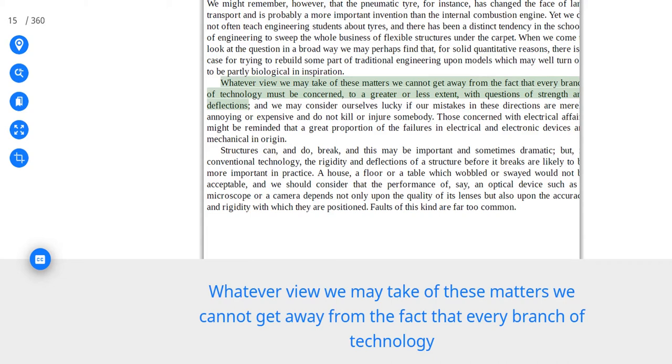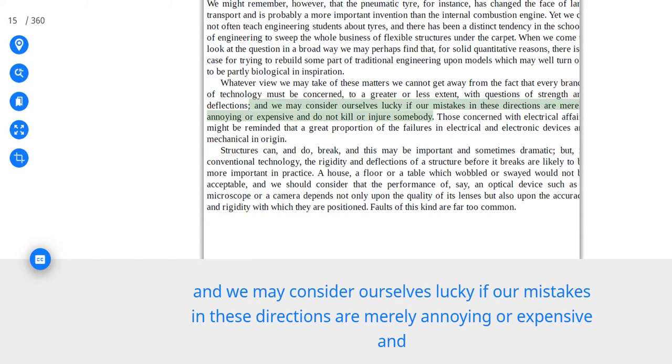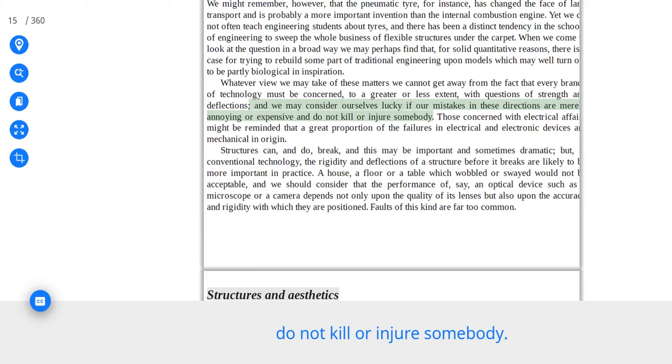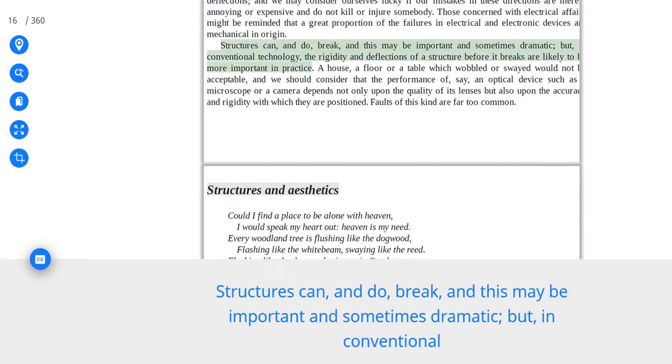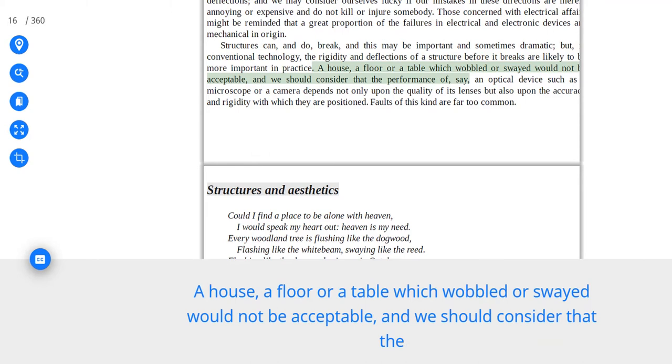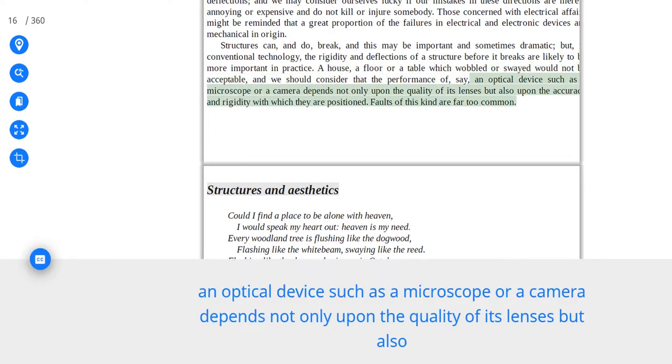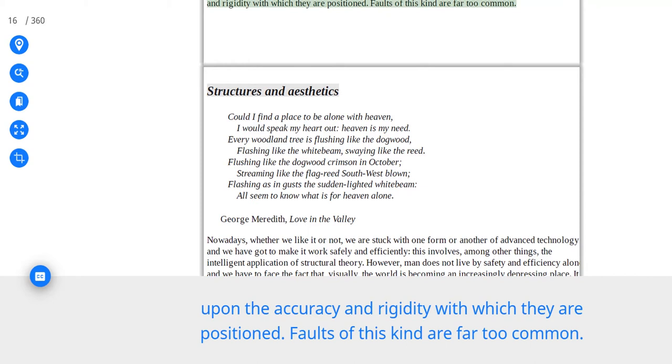Whatever view we may take of these matters we cannot get away from the fact that every branch of technology must be concerned, to a greater or less extent, with questions of strength and deflections. And we may consider ourselves lucky if our mistakes in these directions are merely annoying or expensive and do not kill or injure somebody. Those concerned with electrical affairs might be reminded that a great proportion of the failures in electrical and electronic devices are mechanical in origin. Structures can, and do, break, and this may be important and sometimes dramatic, but, in conventional technology, the rigidity and deflections of a structure before it breaks are likely to be more important in practice. A house, a floor, or a table which wobbled or swayed would not be acceptable, and we should consider that the performance of, say, an optical device such as a microscope or a camera depends not only upon the quality of its lenses but also upon the accuracy and rigidity with which they are positioned. Faults of this kind are far too common.